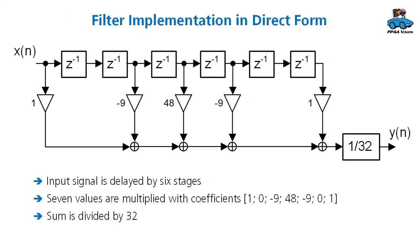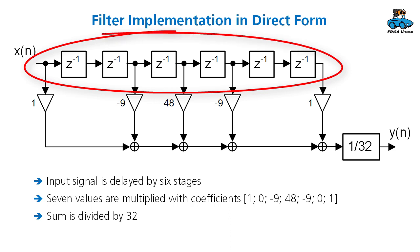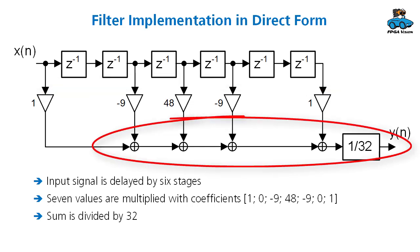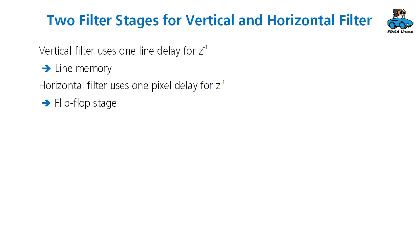For the filter implementation we use the direct form as you find it in the literature. The input signal is delayed by six stages. Then you have seven values that you multiply with the coefficients. Two coefficients are zero, so no multiplication is required here. You sum up these values and divide the sum by 32. In our design we have two filter stages for vertical and horizontal filtering. The vertical filter requires a line memory for one line delay and the horizontal filter uses a flip-flop stage for one pixel delay.